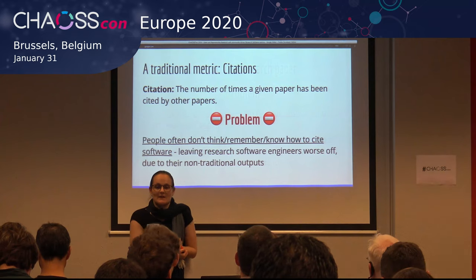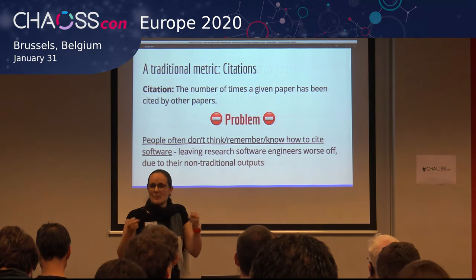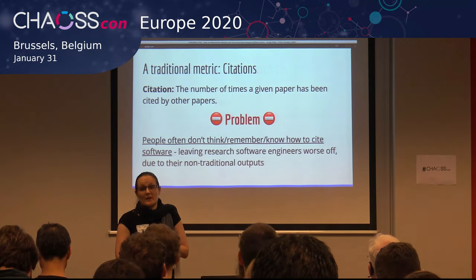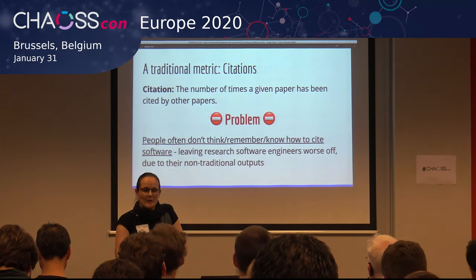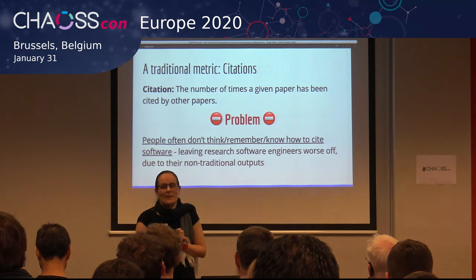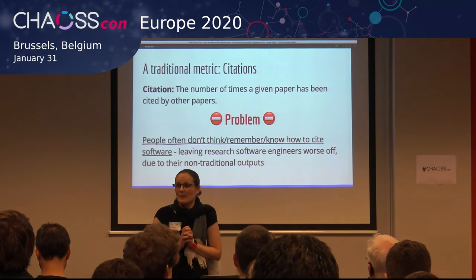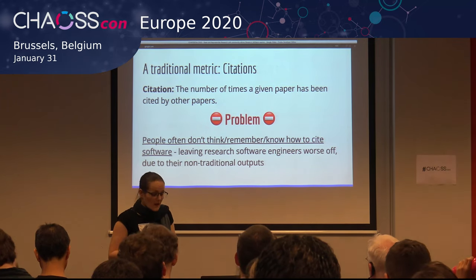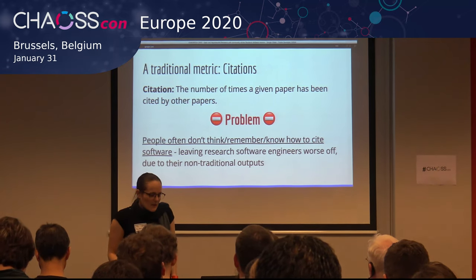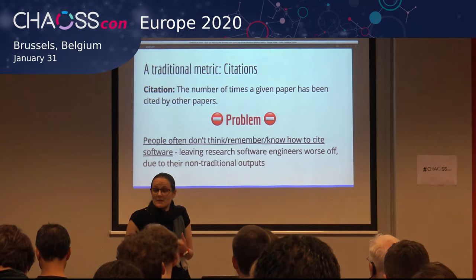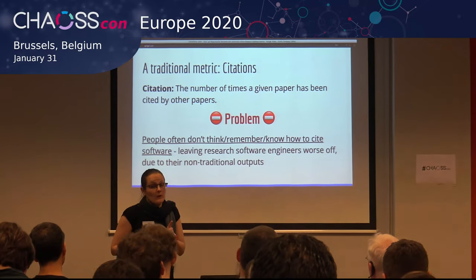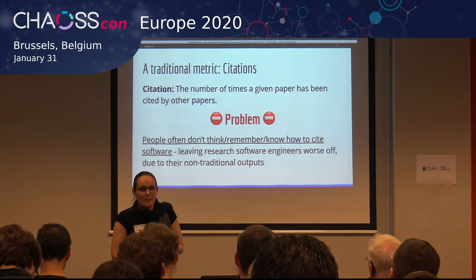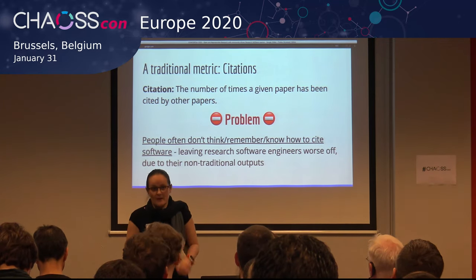Another metric that science has is citations. You write your paper and then people write their own papers and reference the papers that came before them. You are better if you have more citations. Software is not a traditional research output, so that means I may not get the citations that I need to justify my job and my pay. Some people forget they might need to cite the software, some don't know how to cite it, some just ignore it. You might put a citation.md in your software repository — I'd recommend that even if you're not an academic, because it makes it easier to reference your software.